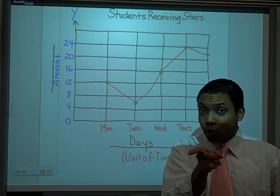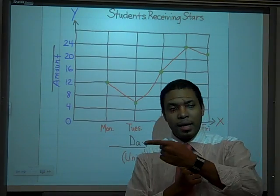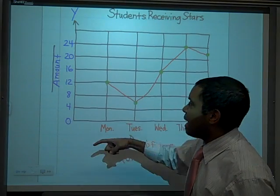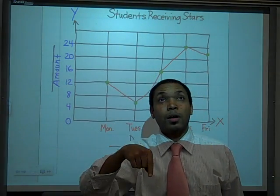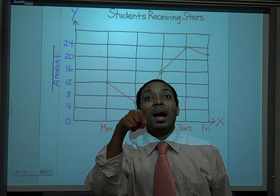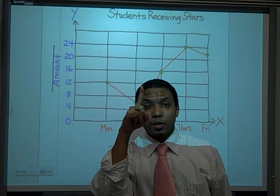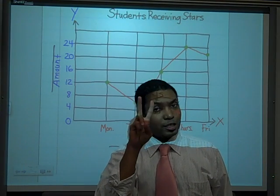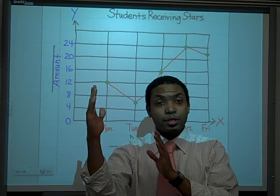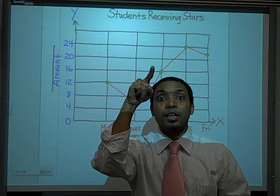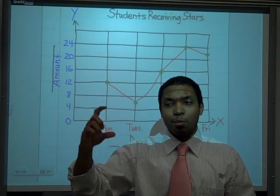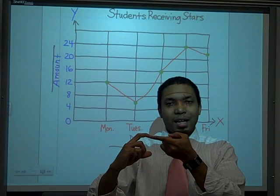The x-axis is showing you time, and time goes from left to right — that's how we read line graphs, from left to right. Now the y-axis is going to be vertical, and it's going to do two things just as it did in the bar graph. First, it's going to show you the amounts. And then you're also going to be able to determine the scale from zero to the first line.